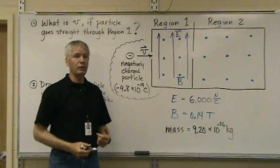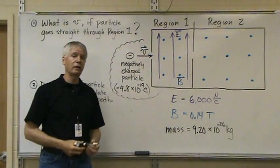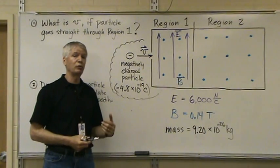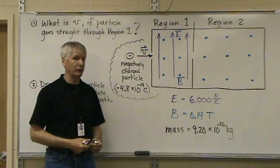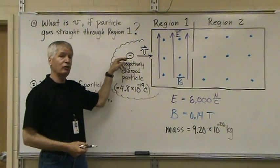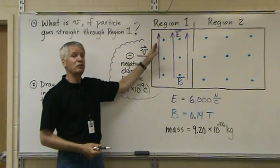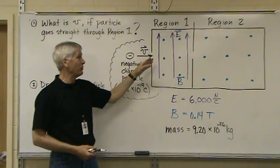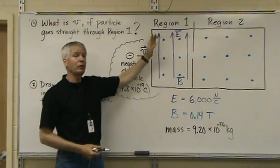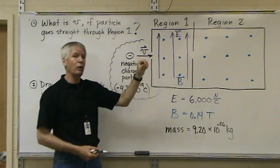We are going to look at the forces acting on a charged particle as it moves through an electric field and a magnetic field. We have a negatively charged particle entering Region 1. In Region 1 we've got an electric field directed upward and a magnetic field directed out of the board.